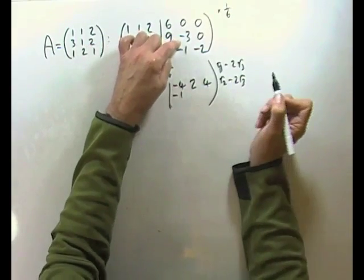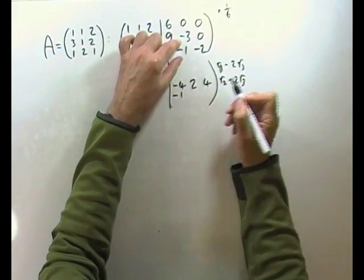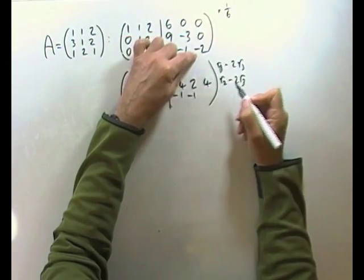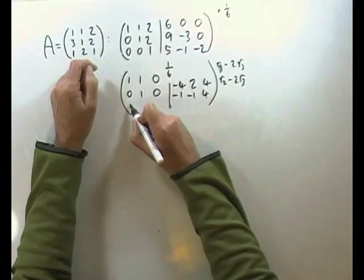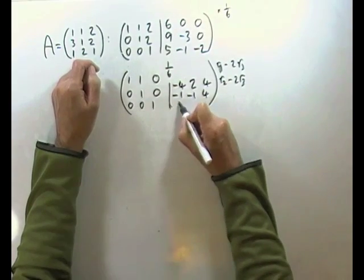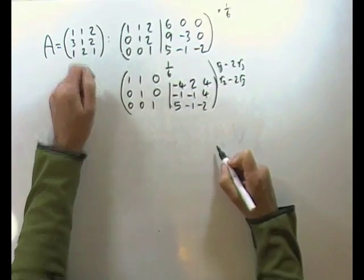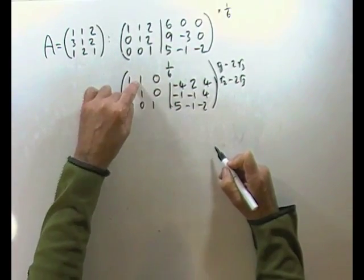Negative three but plus two so that'll be negative one. And zero but plus four so that'll be four. And then leaving the bottom alone. Zero, zero, one, five, negative one, negative two. Almost there, only this one to get rid of.